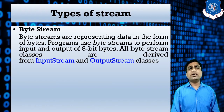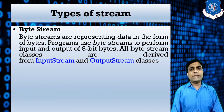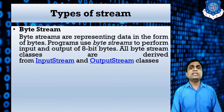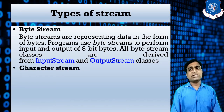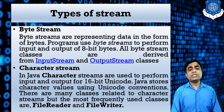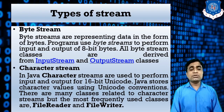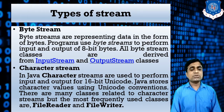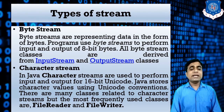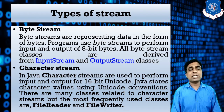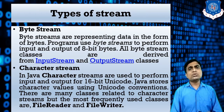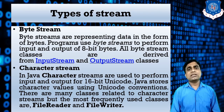Byte stream supports mostly all keyboard characters. Suppose if you want to print any character from your keyboard to a file, you can easily do so. The next type is character stream, which supports 16-bit Unicode. Java character streams are used to perform input and output for 16-bit Unicode — a universal code. The most frequently used classes are FileReader and FileWriter, which are subclasses of the Reader and Writer classes respectively.